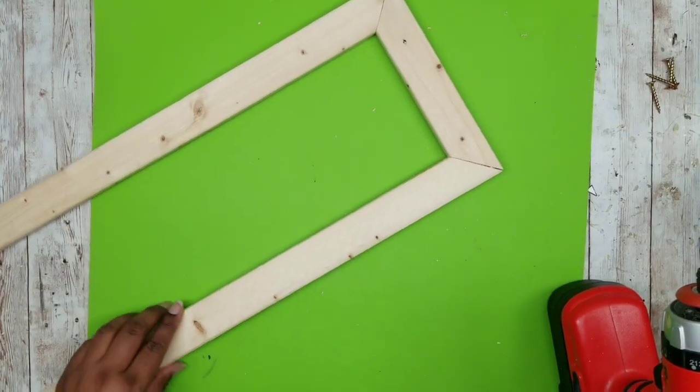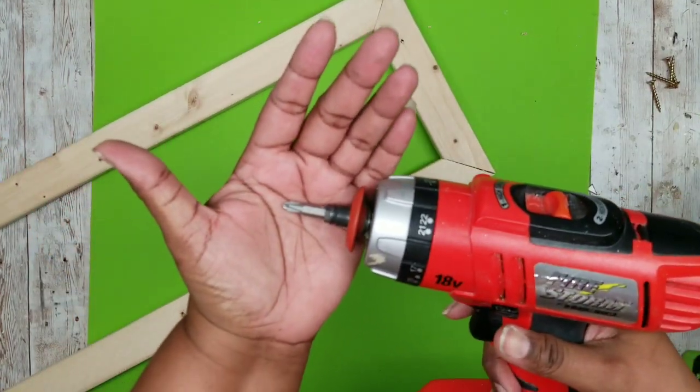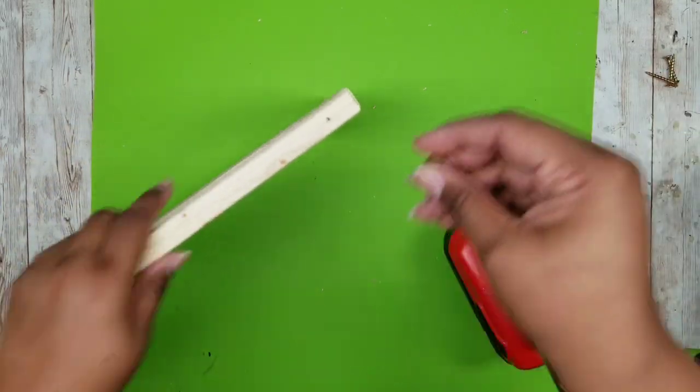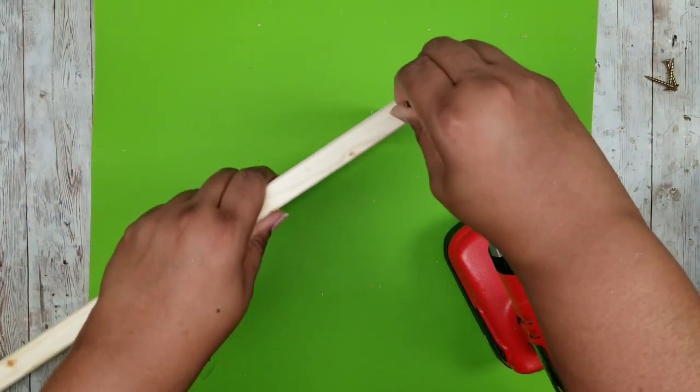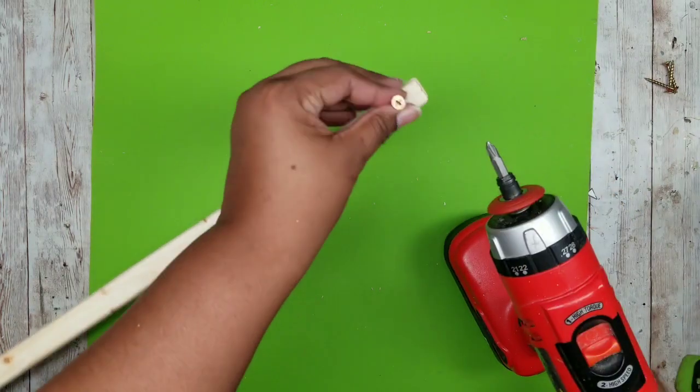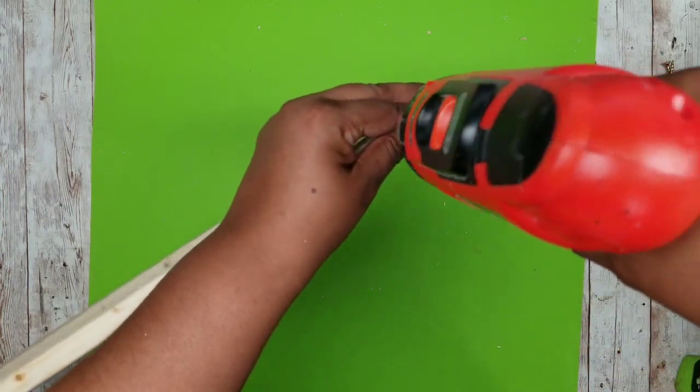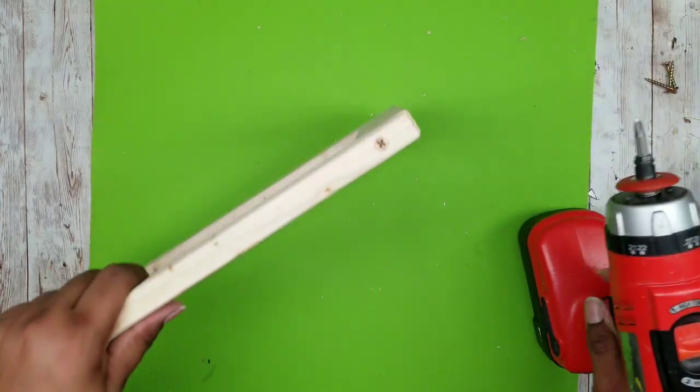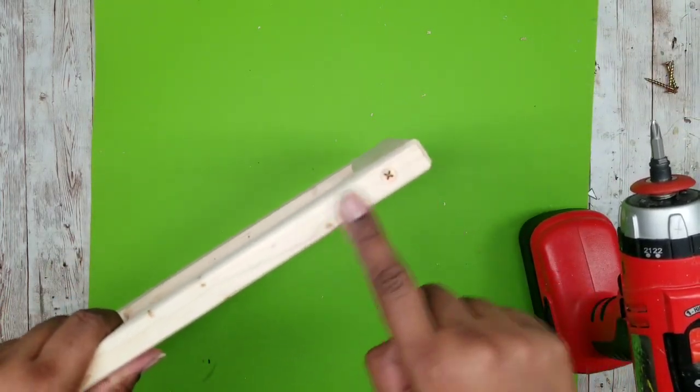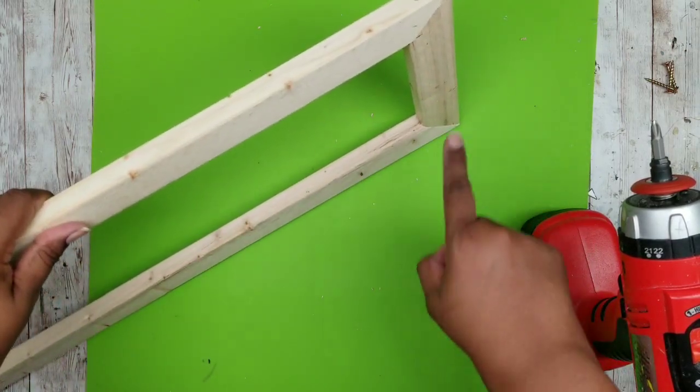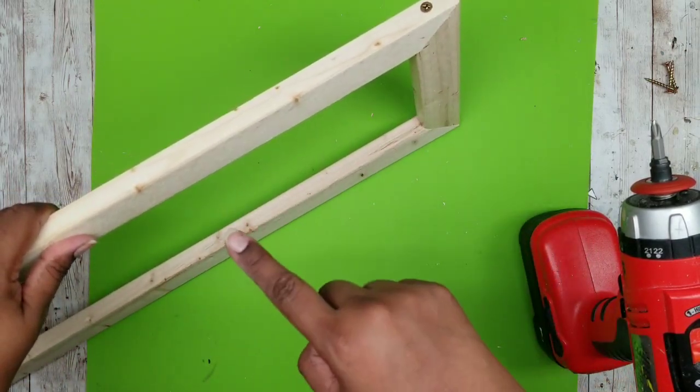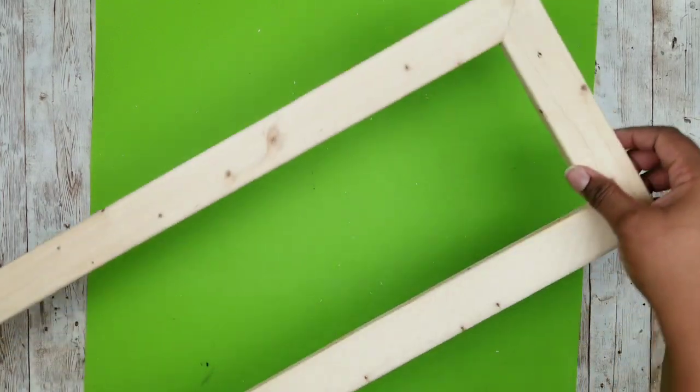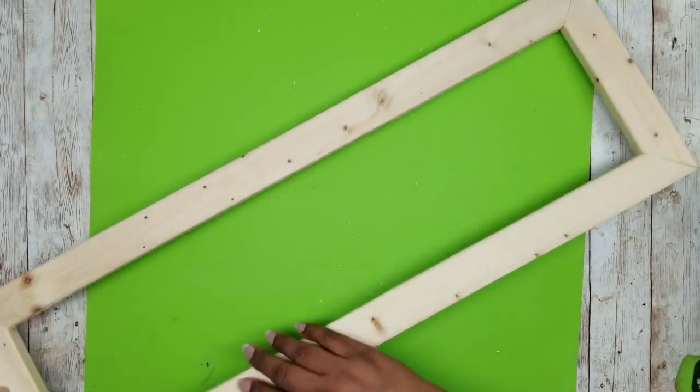Once all your pilot holes are drilled in all of the corners you can go ahead and start applying all of your wood screws. I like to first start by hand threading those in just to make sure they will be going in nice and straight and then following up with my drill to secure them all in place until they're nice and flush with the wood as shown here. Just repeat this all the way around your frame. Now all of our screws are in all four corners of our frame and it's nice and solid.